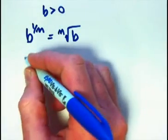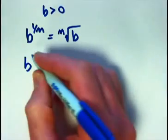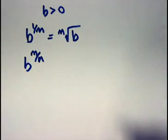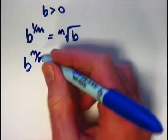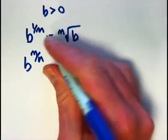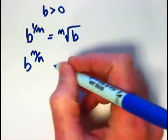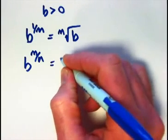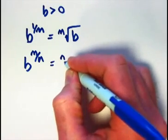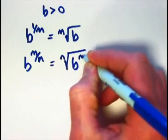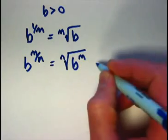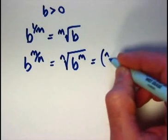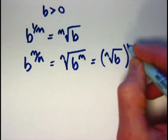What does it mean to raise b to a rational number of the form b to the m over n power? What does that mean? I put the m in the numerator of that fraction now. It was in the denominator before. Now n is in the denominator. It turns out that this can be defined to mean the nth root of b to the m power or equivalently the nth root of b to the m power.